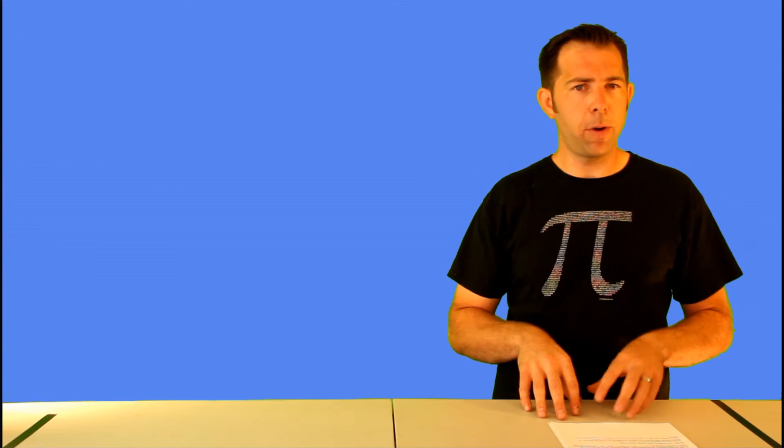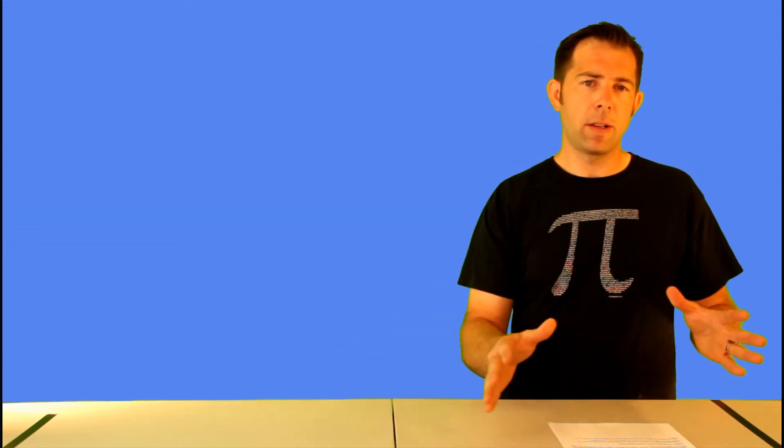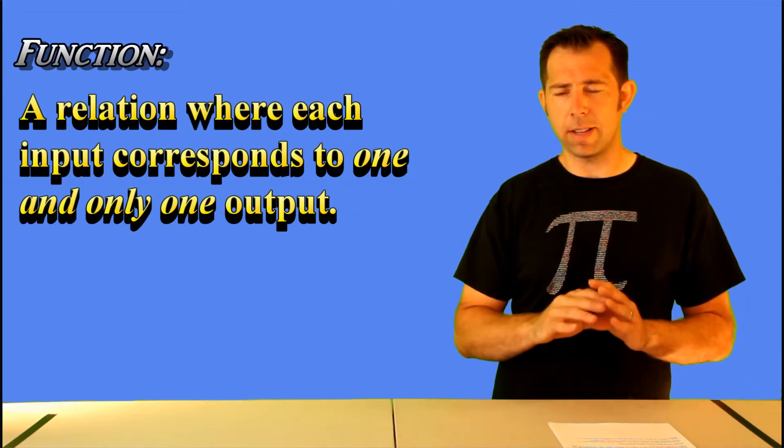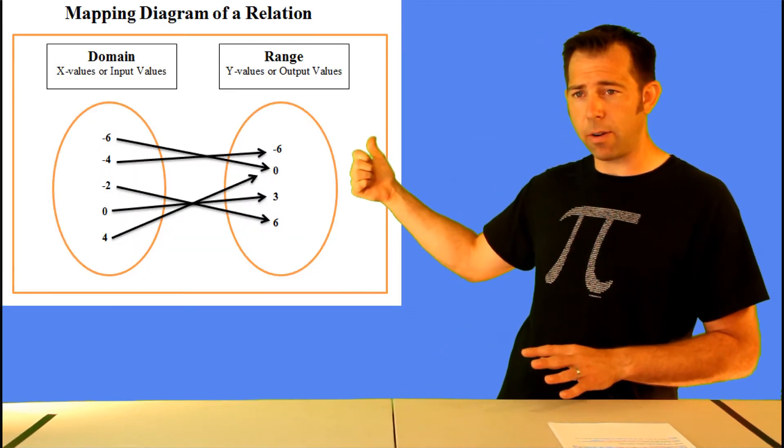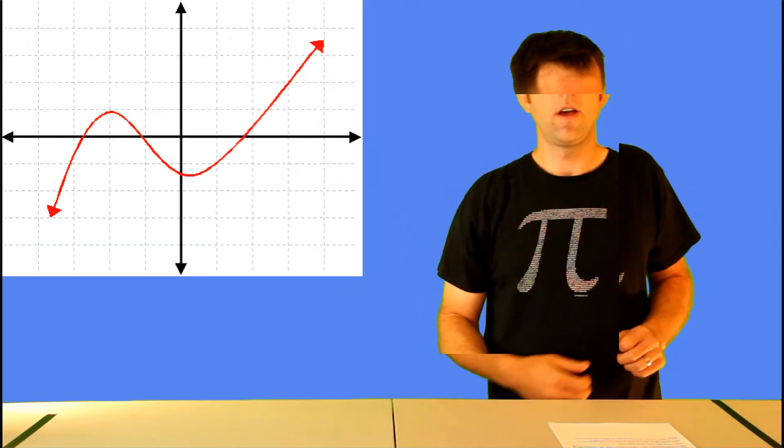A relation in which every input maps to one and only one output is called a function. So certain relations are functions, and a function is one of these mathematical concepts that's important to all of high school math. So this mapping diagram right here could also be described as a function. It's a relation and it's a function.